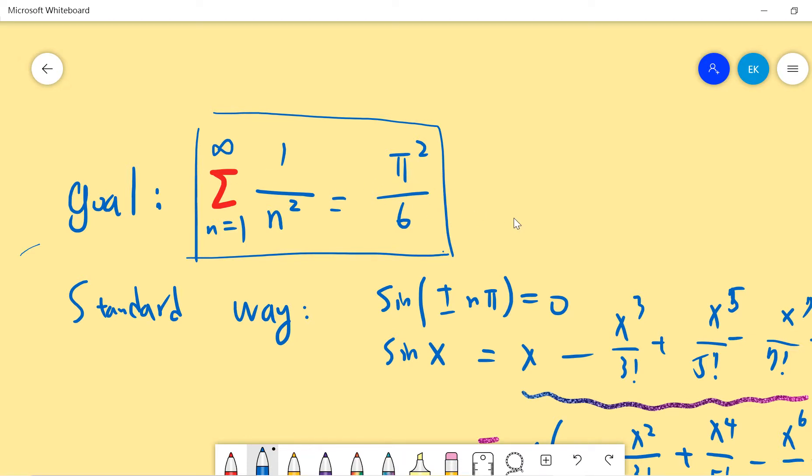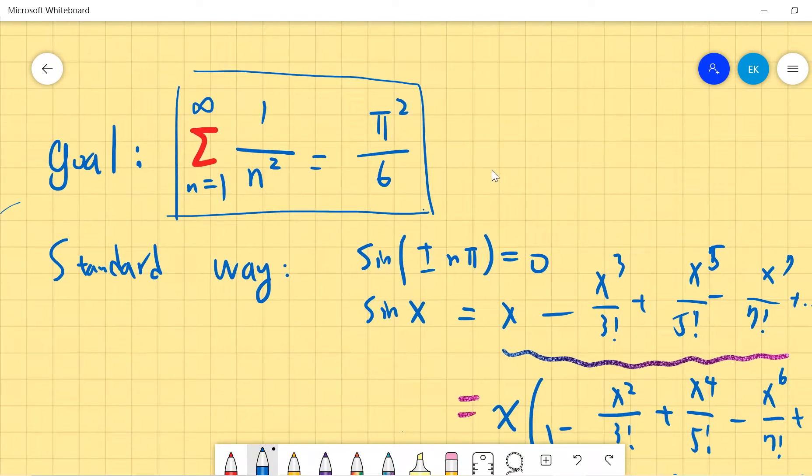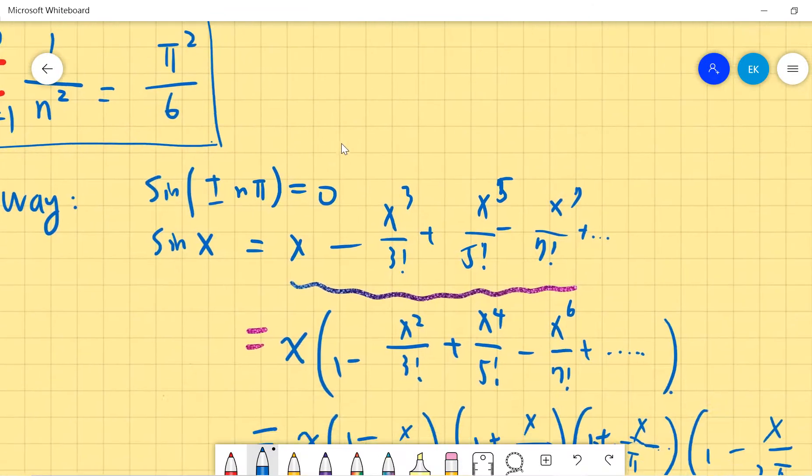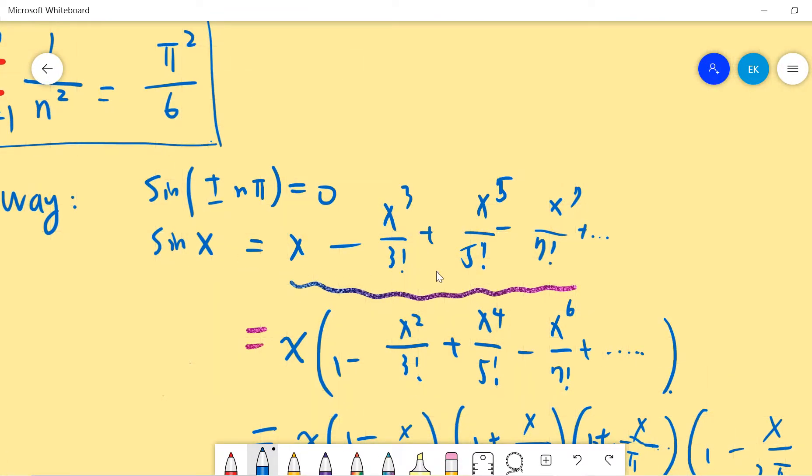We will present two ways. One way will be in this video, another way will be in another video. The standard way is that we can use the Taylor expansion to write sin(x) equals x minus x³ divided by 3 factorial plus x to the fifth power divided by 5 factorial and so on. This is the standard Taylor expansion.